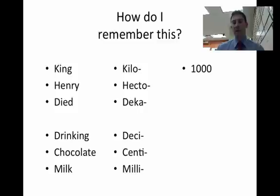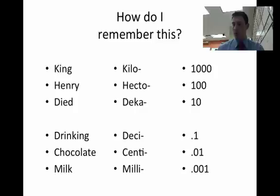So what values go with those? Again, kilo is a thousand, hecto 100, deca 10, deci is one-tenth or 0.1, centi 0.01, and milli 0.001. So let me go back there real quick. King Henry died drinking chocolate milk is an easy way to remember the order of this metric ladder.